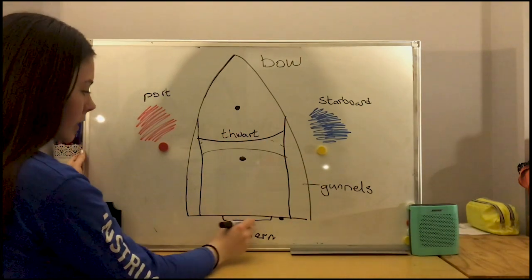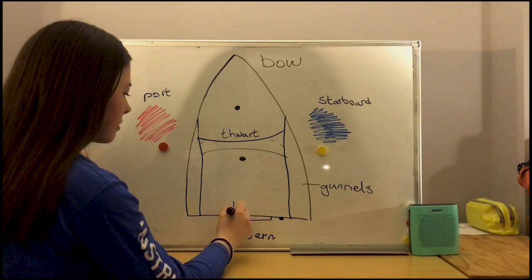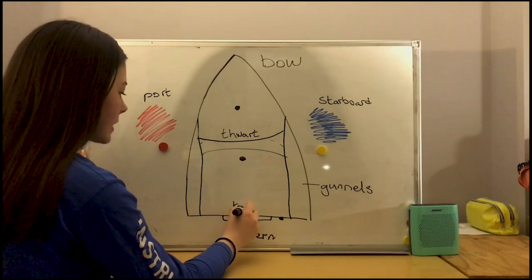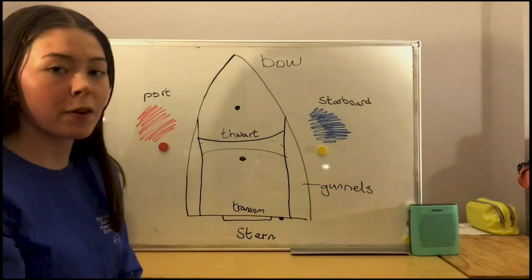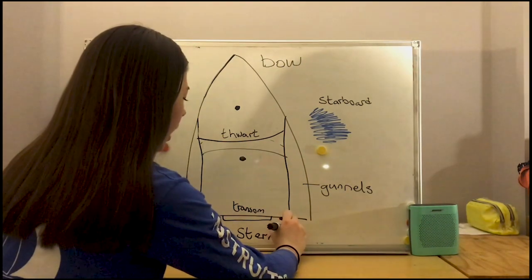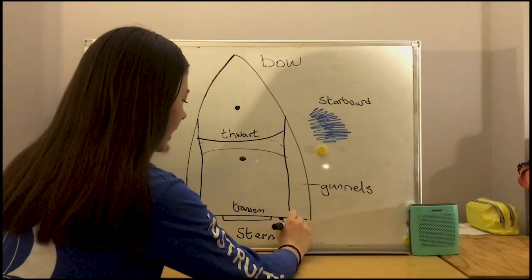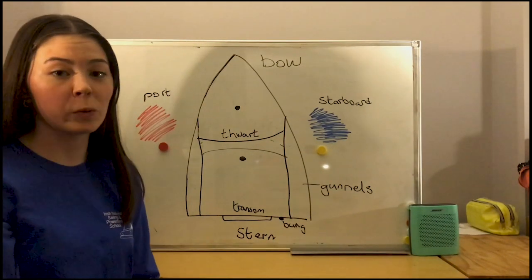At the back here, this block where the rudder attaches onto is called the transom. And then over here as well, we have our bung. And make sure you screw that in before you go sailing unless you want your whole boat to be filled with water.